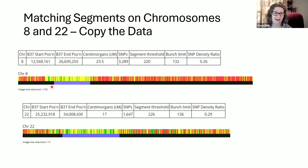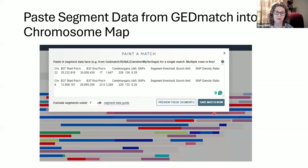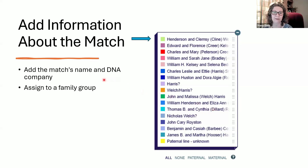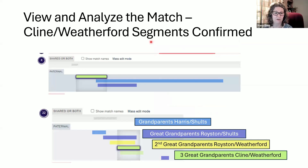The next thing was how to paste that data into my chromosome map on DNA Painter. It was really easy — I literally copied all of that chromosome data, and then over on my chromosome map on DNA Painter I selected 'paint a new match' and just pasted that information in. I didn't have to do anything special. I could preview the segments to make sure it looked correct — I wanted to see that it was on chromosomes 8 and 22. When I saved the match, I could designate it as paternal and choose an ancestral couple. I assigned it to Henderson and Clumsy Klein, so it got the green color.